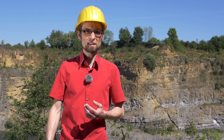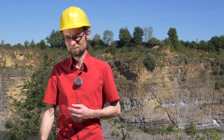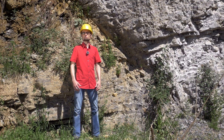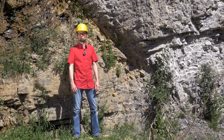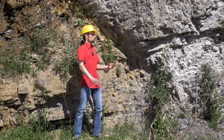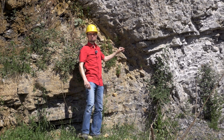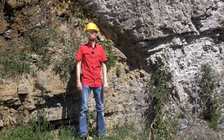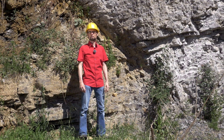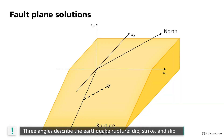I will show you at the fault zone down there how the movements along the fault can be described quantitatively. I am now directly at the fault zone in front of an ancient layered ocean floor. Here we can see where the layers moved relative to each other. How exactly this movement takes place during an earthquake is generally described via three parameters. Firstly, the angle of inclination of the rupture plane to the surface, which is called the dip.